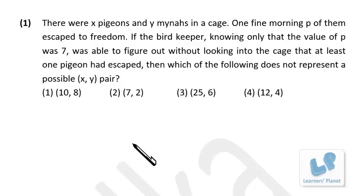There were X pigeons and Y mynas in a cage. One fine morning P of them escaped. The bird keeper knew only that P equals 7 — seven birds escaped — and was able to figure out without looking into the cage that at least one pigeon had escaped. The question asks which XY pair does not represent a possible combination.